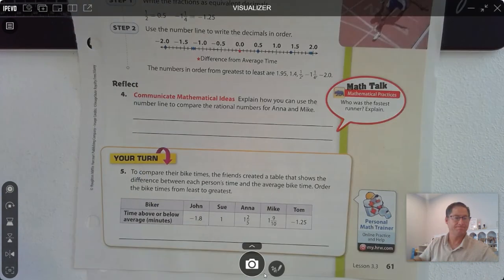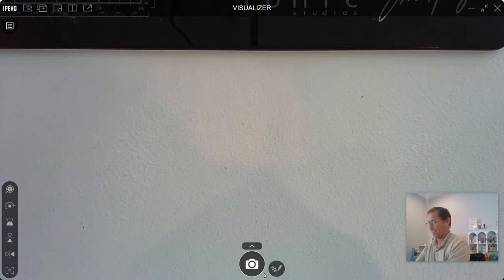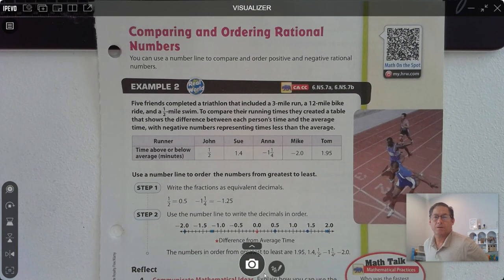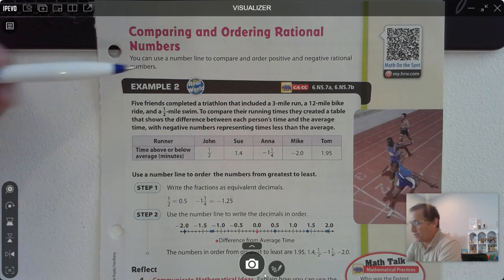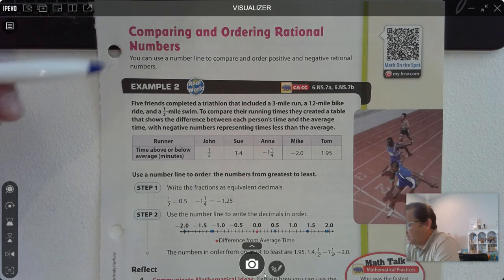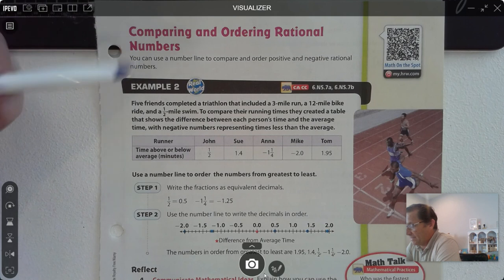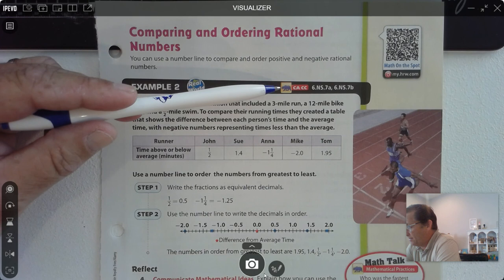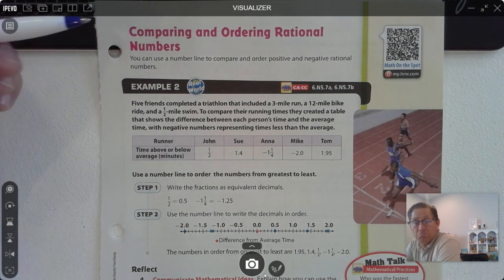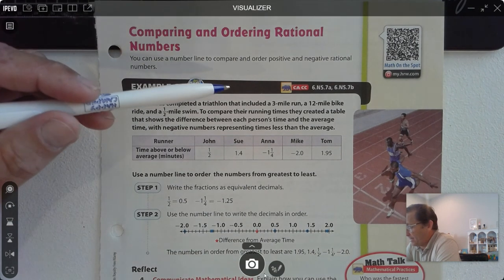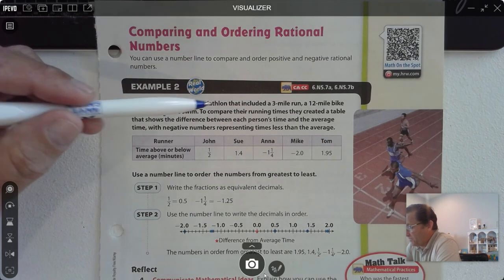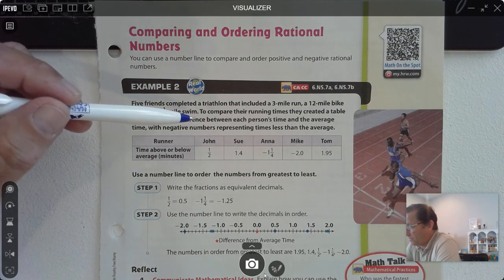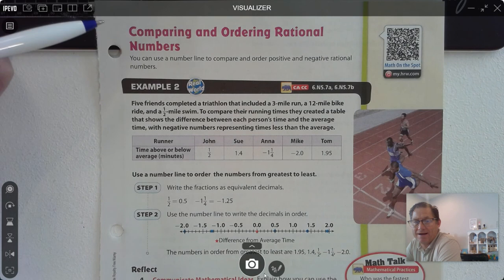Let's move on to page 61 and continue comparing and ordering rational numbers. You can use a number line to compare and order positive and negative rational numbers. Example 2: five friends completed a triathlon that included a 3-mile run, a 12-mile bike ride, and a half-mile swim. To compare their running times, they created a table that shows the difference between each person's time and the average time, with negative numbers representing times less than the average.